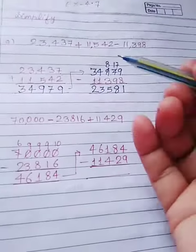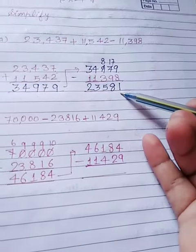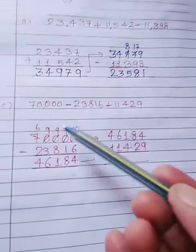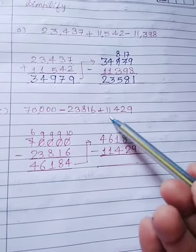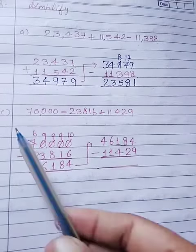our answer is 23,581. And our next question C is 70,000 minus 23,816 plus 11,429. Dear students,